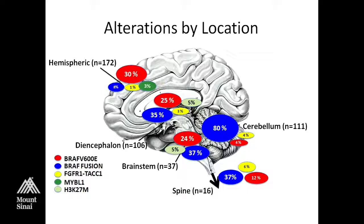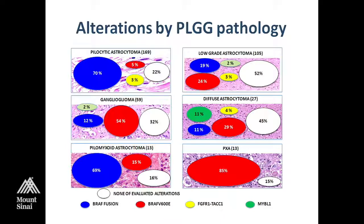Looking by pathology, there are interesting associations, again highlighting that these are not disease-defining. If something histologically looks like a pilocytic astrocytoma, there's a 70% chance it'll have a BRAF fusion and only about a 5% chance of the V600E mutation. For a PXA, 85% of our cases had a BRAF mutation, and over 50% of cases called ganglioglioma had a BRAF mutation.